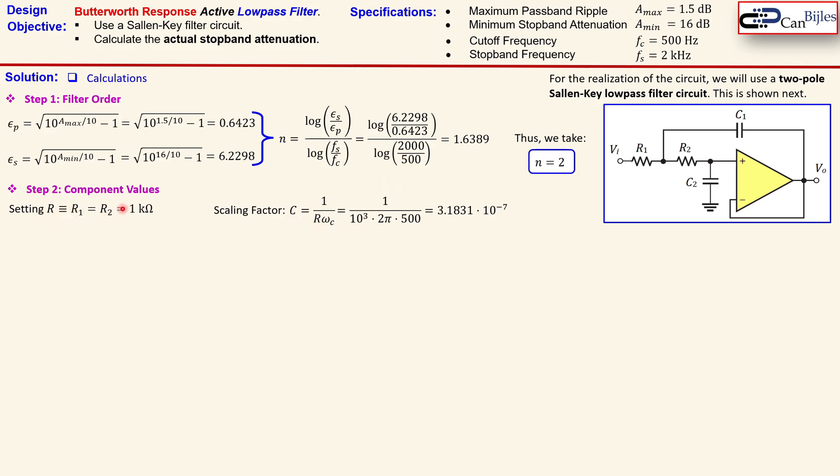Now the R is already selected. That is 1000. 2π times 500 which is our cutoff frequency and you get here 3.1831 times 10 to the power minus 7.